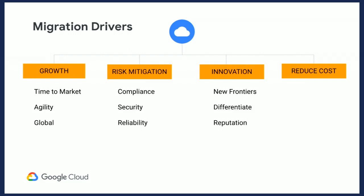Innovation is one of the key drivers — whether it's around artificial intelligence, machine learning, or big data. The cloud not only helps enterprises explore new frontiers to serve their customers, but also differentiate from competition and build a reputation as a forward-looking organization. Cost is also one of the most important factors. Cloud provides various productivity tools, automation capabilities, and lets you scale infrastructure based on varying demands — peak or off-peak — and choose the financial model that works best for your organization.